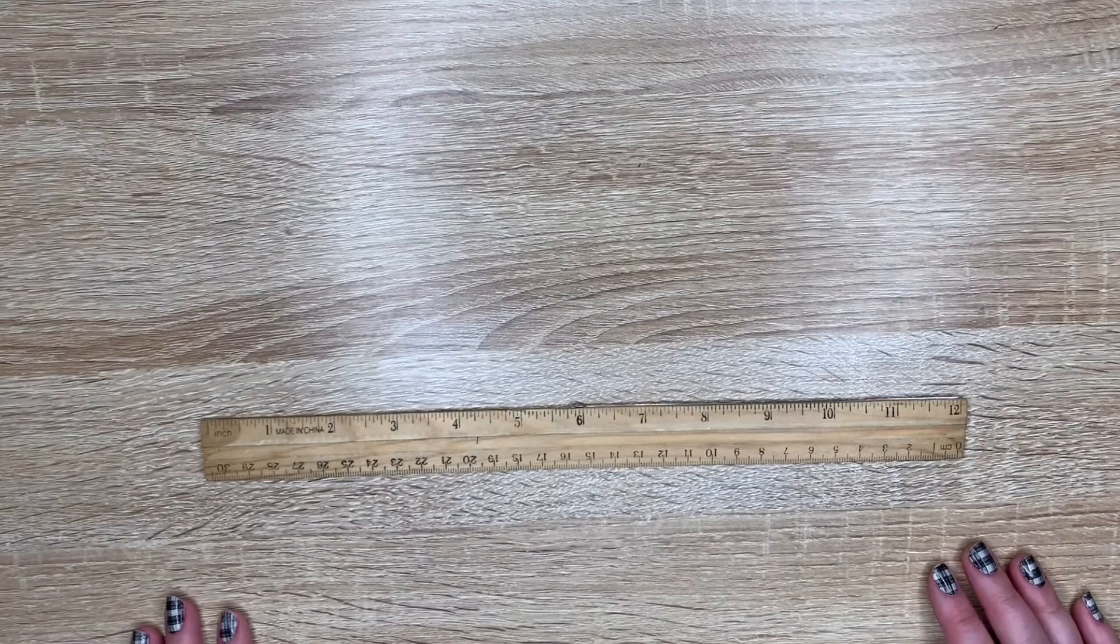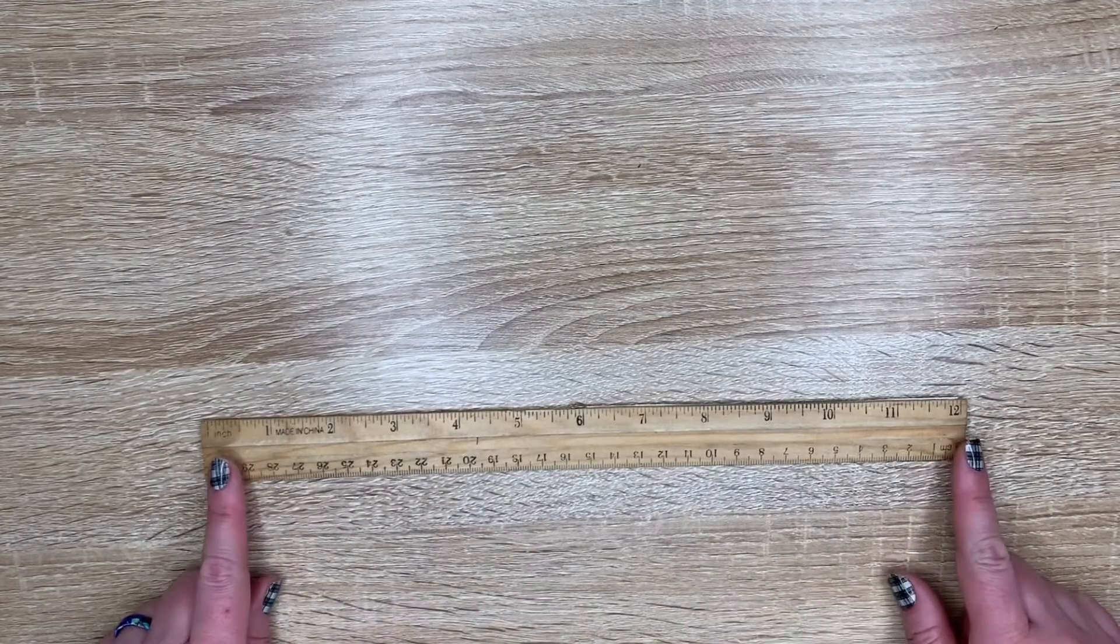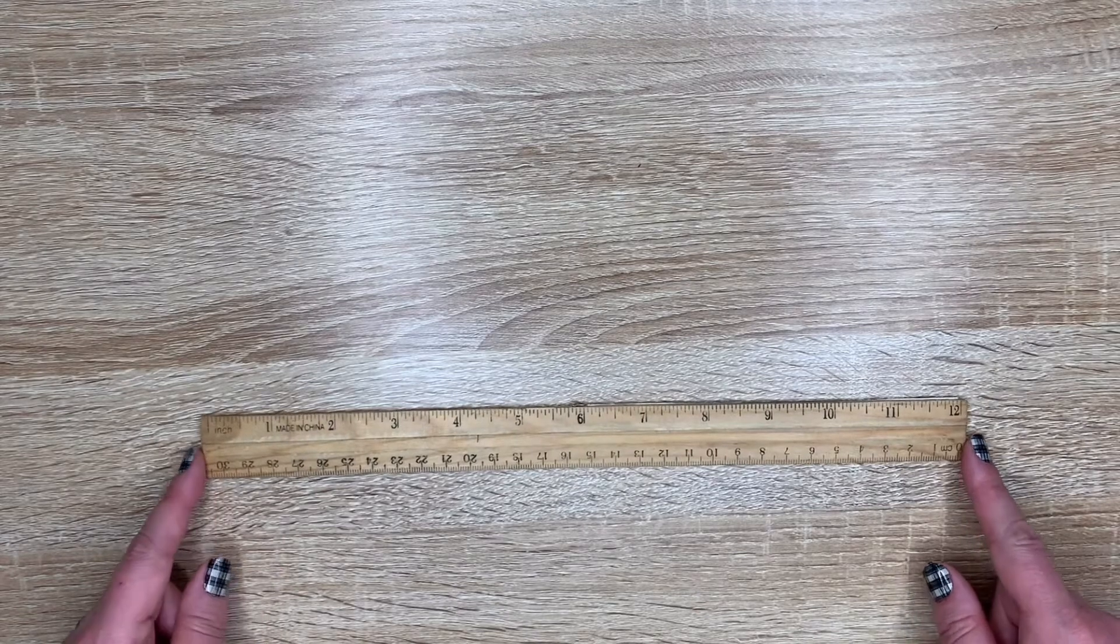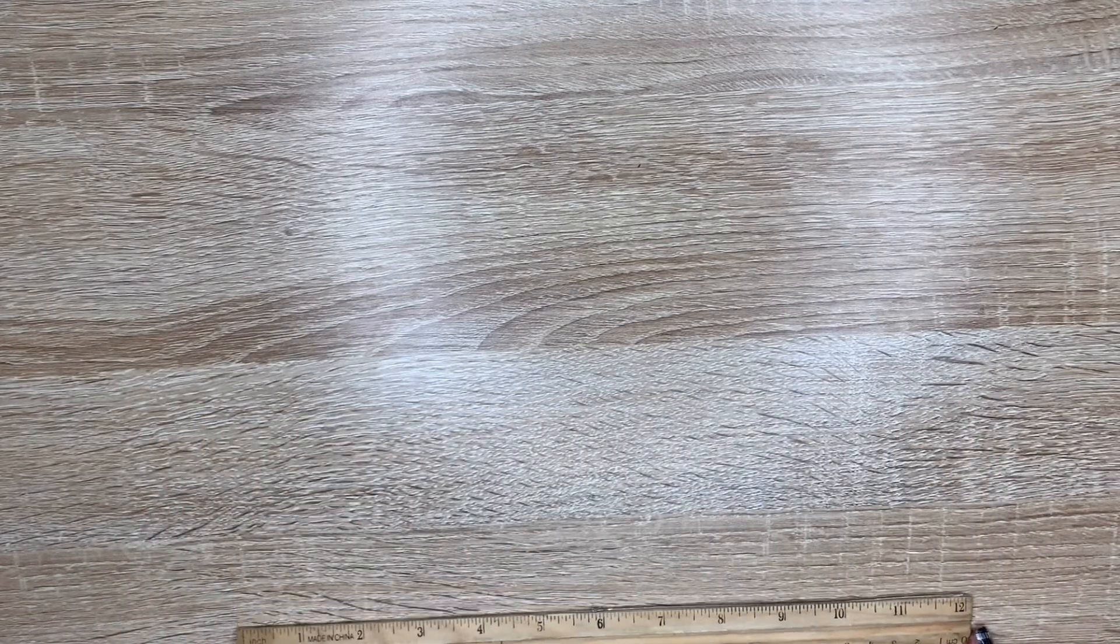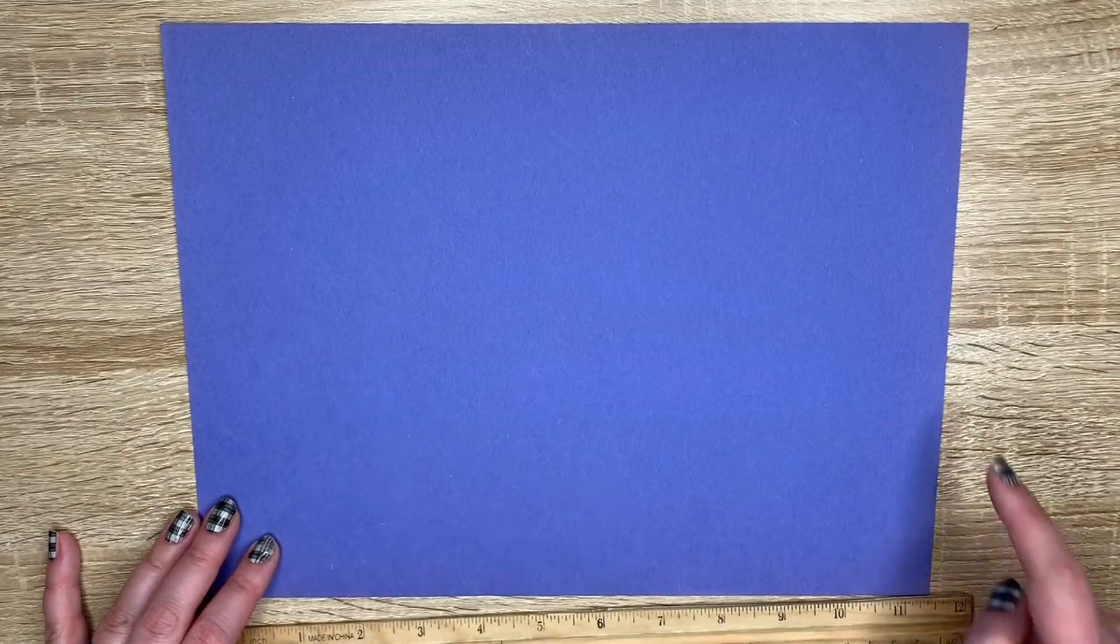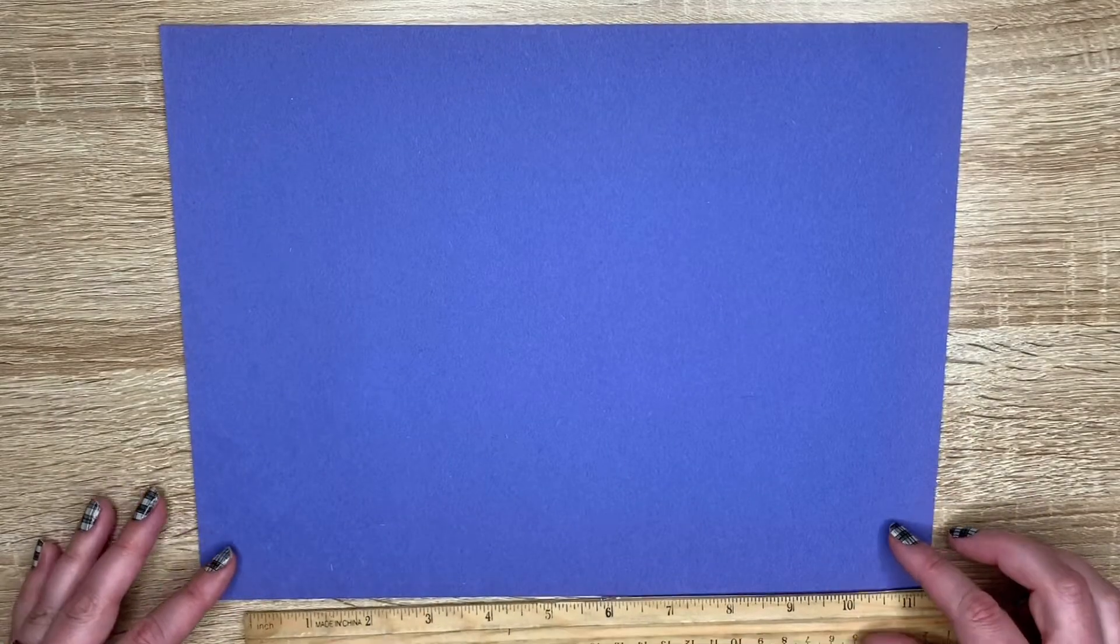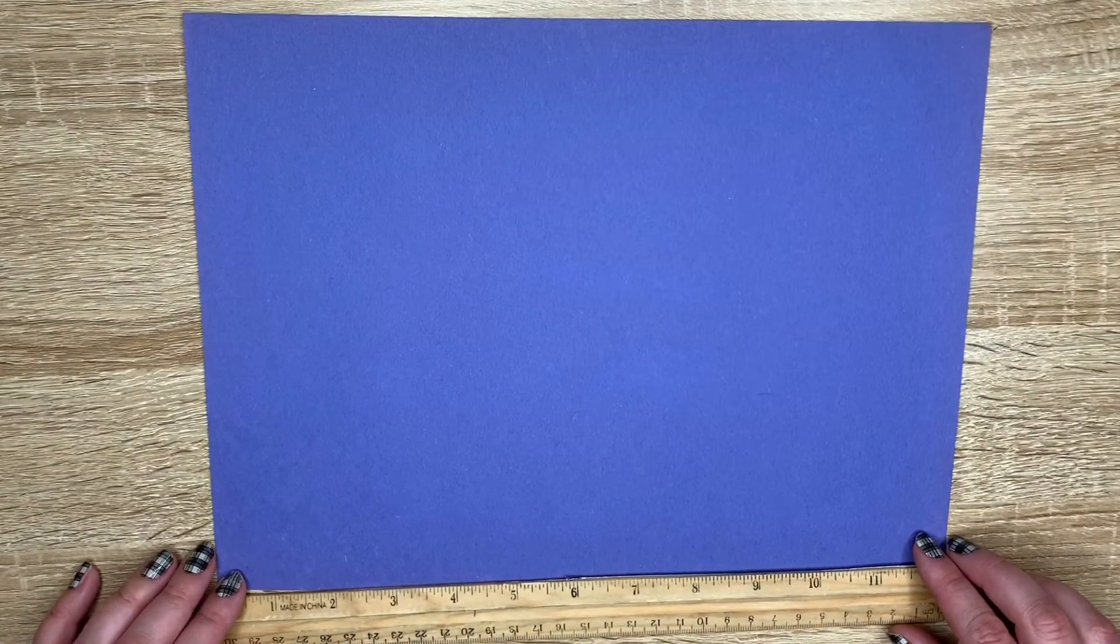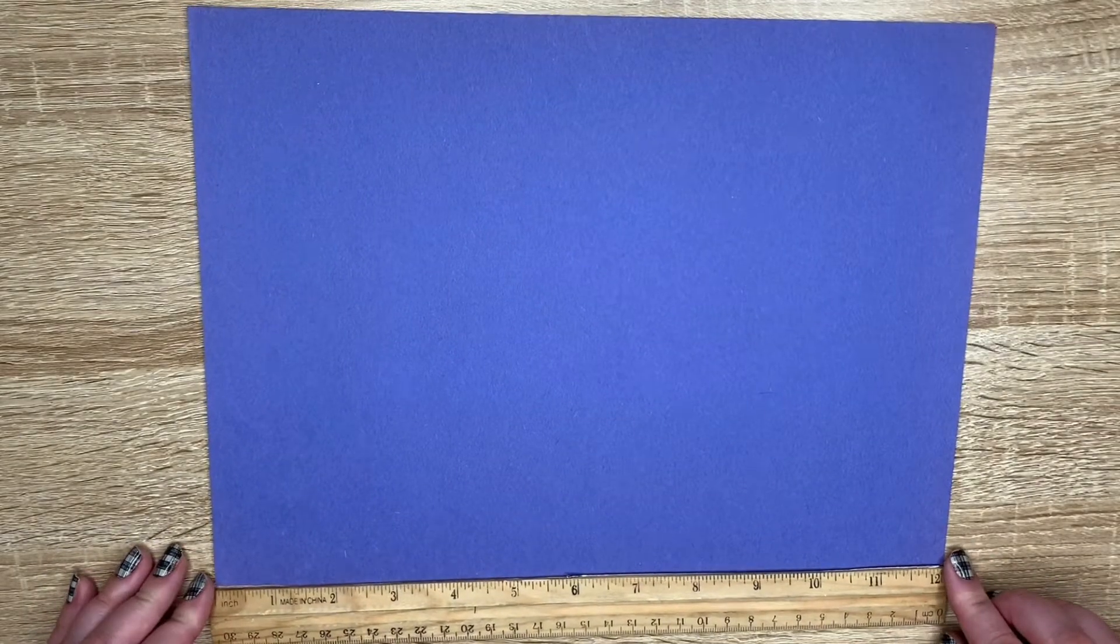Now we're going to look at a foot. This whole ruler, or 12 inches, is one foot. One foot is about the size of a piece of construction paper. When we turn it this way it is called landscape. So we can see that it's about the size of my whole ruler, and that is one foot.